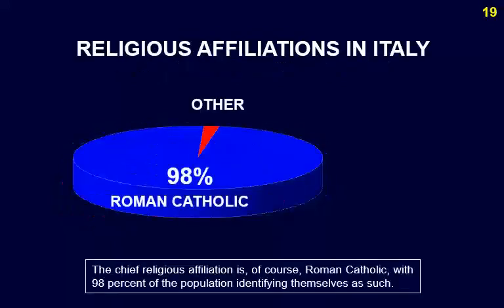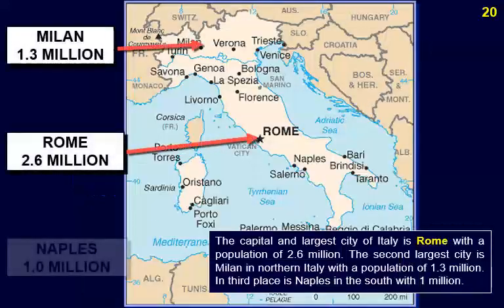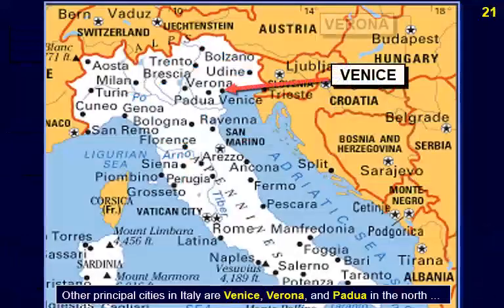The chief religious affiliation is Roman Catholic, with 98% of the population identifying themselves as such. The capital and largest city of Italy is Rome, with a population of 2.6 million. The second largest city is Milan in northern Italy with a population of 1.3 million. In third place is Naples in the south with 1 million.